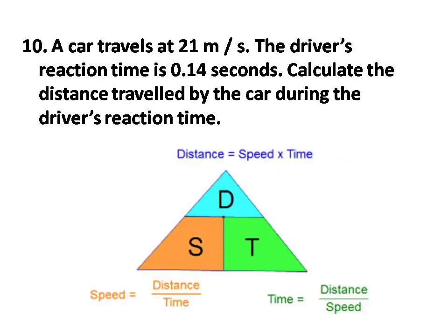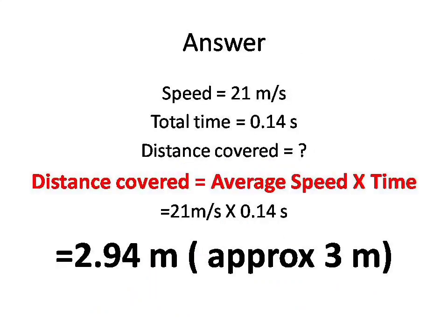Question number ten. A car travels at 21 meters per second. The driver's reaction time is 0.14 seconds. Calculate the distance traveled by the car during the driver's reaction time. Answer is 2.94 meters, approximately 3 meters. It is calculated using the mentioned formula.